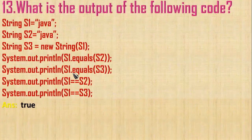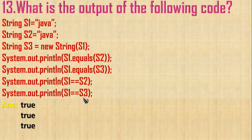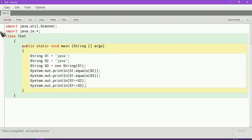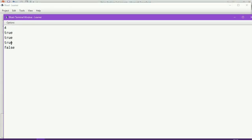For s1.equals(s3), that is also true because s3 holds the same content. However, when it comes to s1 == s3 using the equality operator, it will be false because s3 is a new object. After compiling with no syntax error, you can see the output: true true true false.